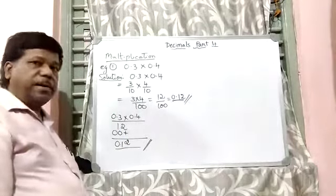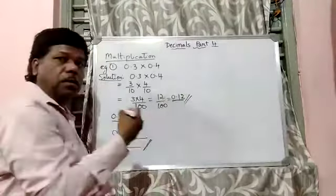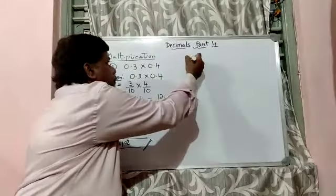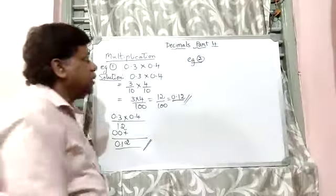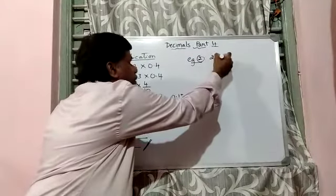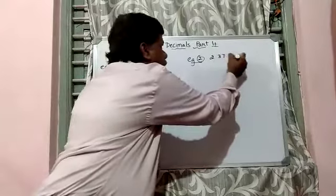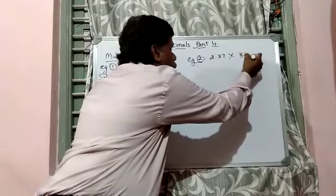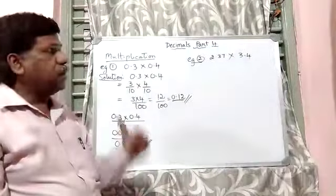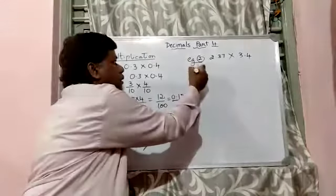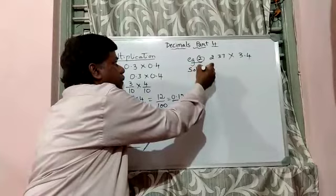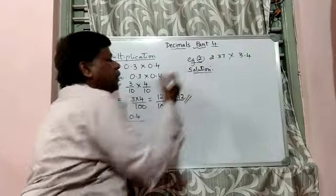Let us take another example in which we will take bigger numbers. So example number 2. Supposing that is 2.37 and it's multiplied by 3.4. So these are bigger numbers, isn't it? So let us just try to solve this. Solution is this.